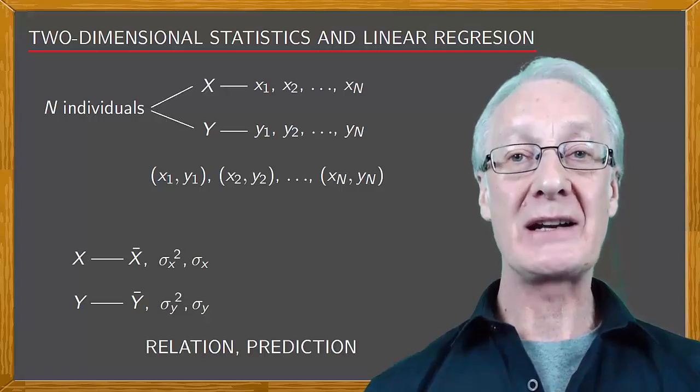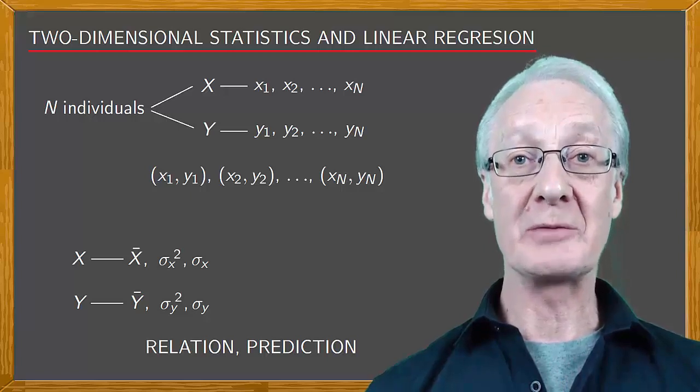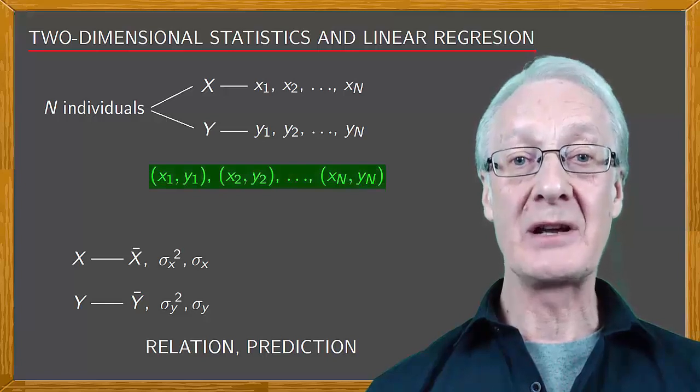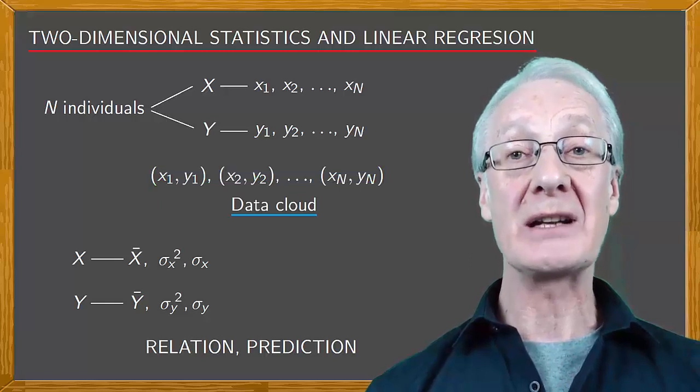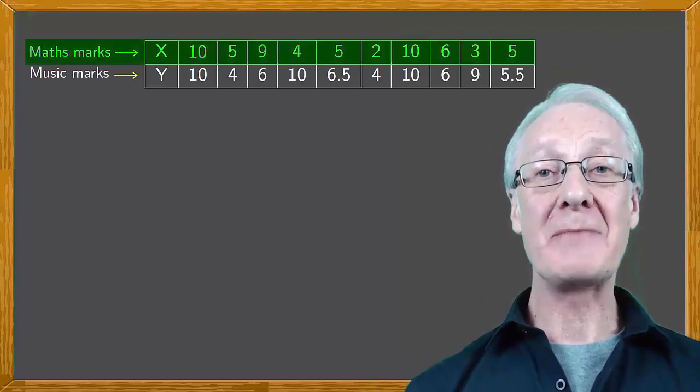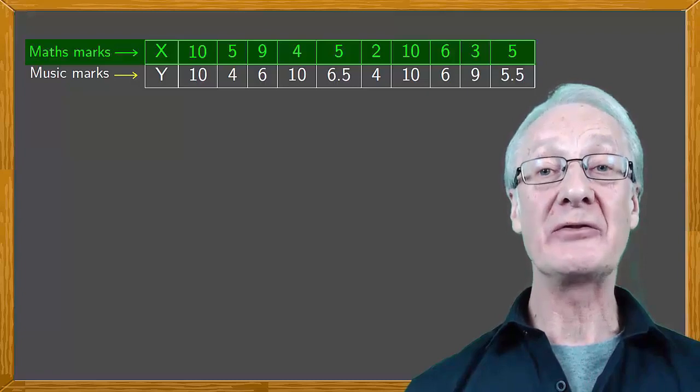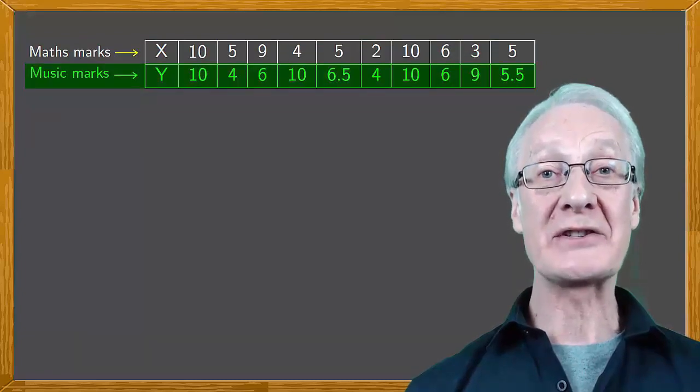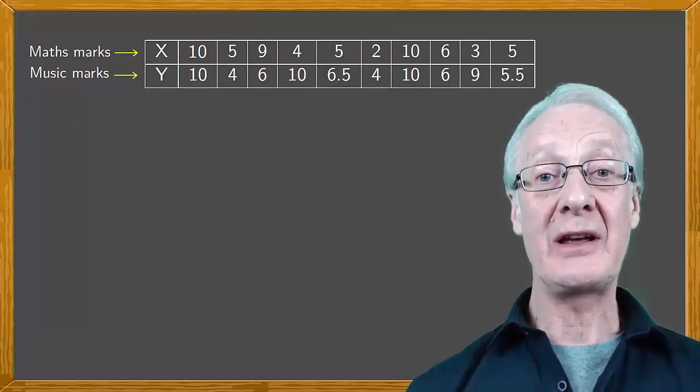When it comes to understanding the relationship between the two variables, a graphical representation can be very useful. We graphically represent the corresponding pairs of data to give what's known as a data cloud. To understand this better, let's look at an example. The sample on the screen shows the mathematics marks of students in a class of 10, denoted by the statistical variable x, and the music marks of these same students, denoted by the variable y. As the sample is composed of 10 individuals, n equals 10.